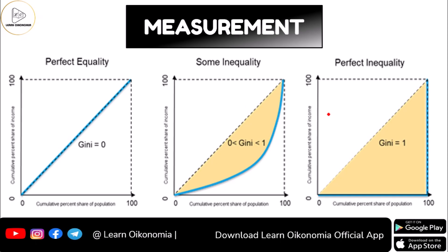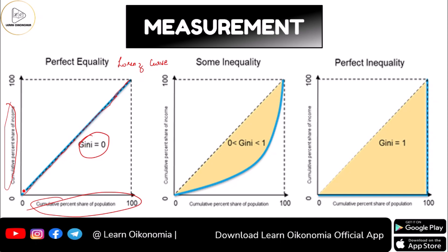Here we can see a graphical representation called the Lorenz curve — a graphical or pictorial representation of inequality. If you have a Gini equal to 0, your Lorenz curve will coincide with the line of equality. On the x-axis you measure the cumulative percent of population, and on the y-axis the cumulative percentage share of income. This straight line starting from the origin is known as the line of equality, and it shows the case of perfect equality.